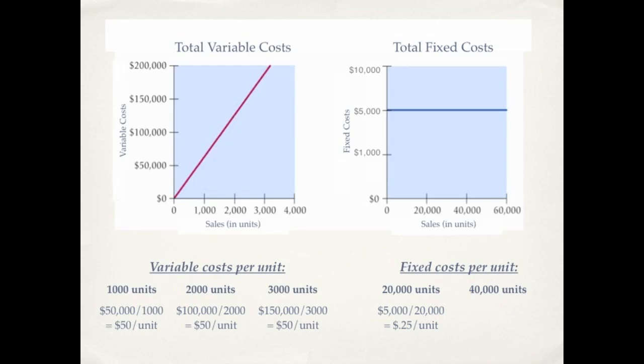What do you think fixed costs per unit are going to do as the activity level increases? If you said decrease, you're exactly right. The fixed cost per unit at 40,000 sales units is 12.5 cents per unit.